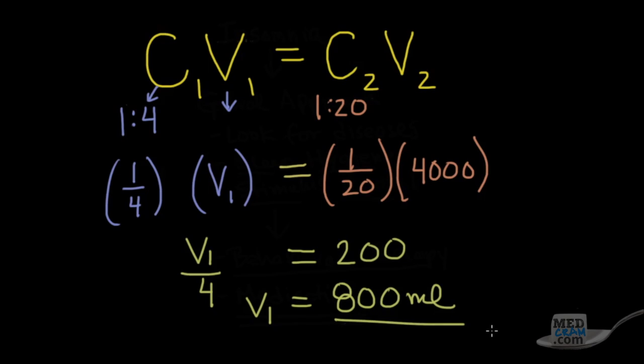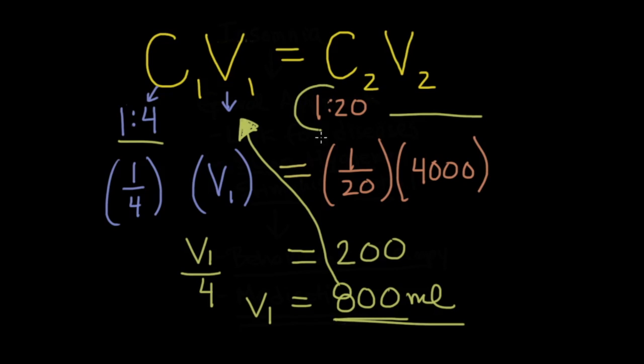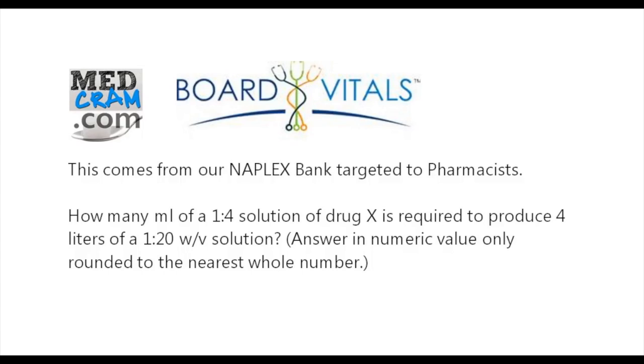So if we plug that back in here, we'll see now the final equation will say, if I take 800 mLs of a 1 to 4 solution, I can simply add enough water until I reach 4,000 mLs. In other words, I will be adding 3,200 mLs. And when I reach that point of 4,000, my new concentration will be 1 to 20. So once again, the answer is 800 mLs. Well, thanks for joining us.